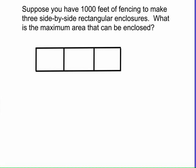In this video we'll be doing an optimization problem. The problem says suppose you have 1,000 feet of fencing to make three side-by-side rectangular enclosures. What is the maximum area that can be enclosed?